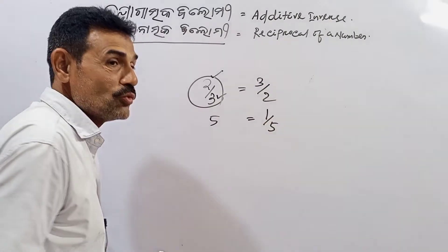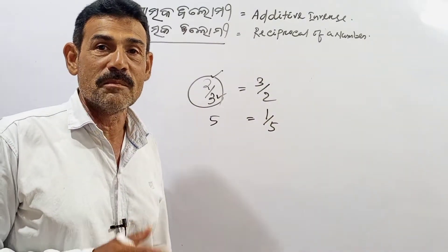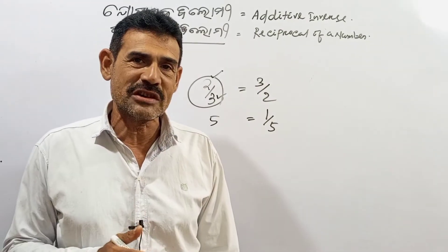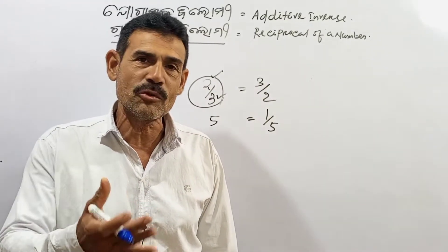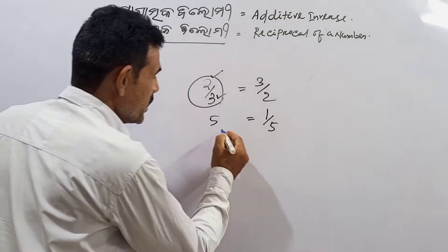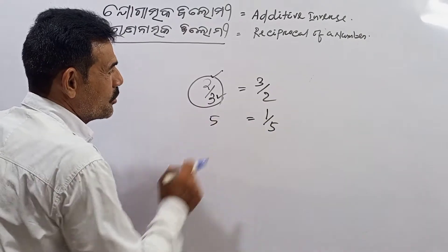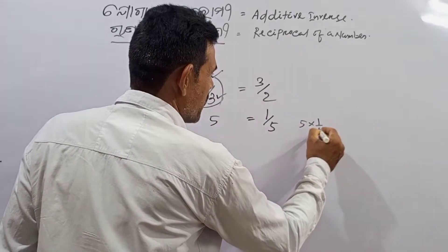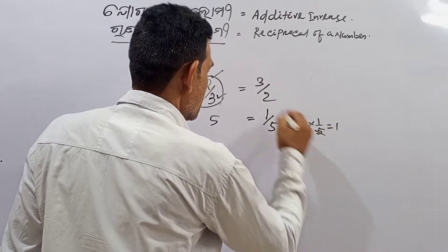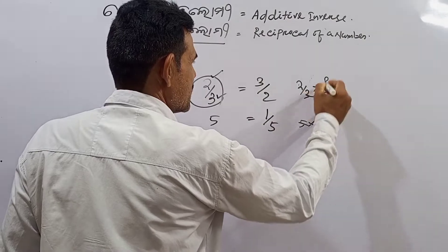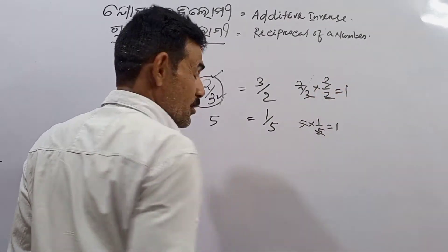Now for multiplicative inverse or reciprocal: 1 by 5 times 5 equals 1. This is 2 by 3 times 3 by 2, which equals 1.